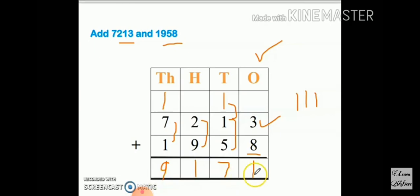Then 2 plus 9 equals 11. Write 1, one carry over to thousand room, make a room in thousand place. Then 1 plus 7 equals 8, plus 1 equals 9. So my answer is 9171 - nine thousand one hundred and seventy one. Understood how to do?